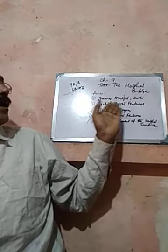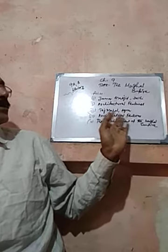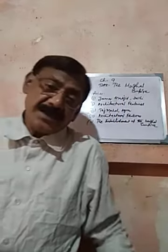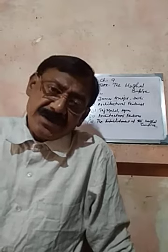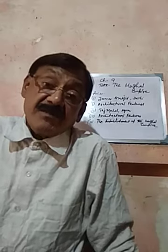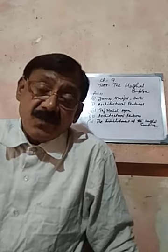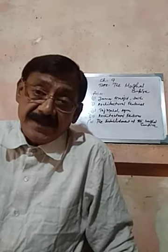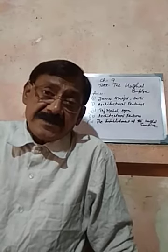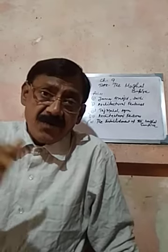The first point is Jama Masjid, Delhi. Jama Masjid was constructed by Mughal Emperor Shah Jahan. It is also known as Jami Masjid. It is considered one of the biggest mosques of India. It was constructed beside the river Yamuna and in front of the Red Fort.